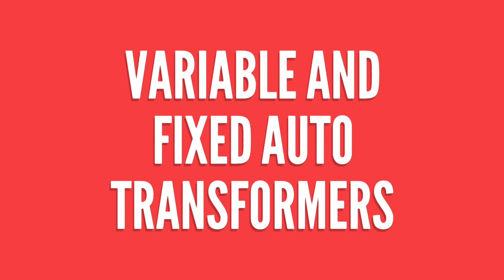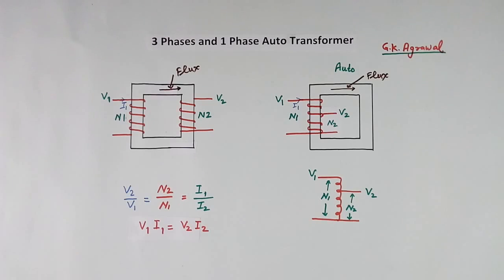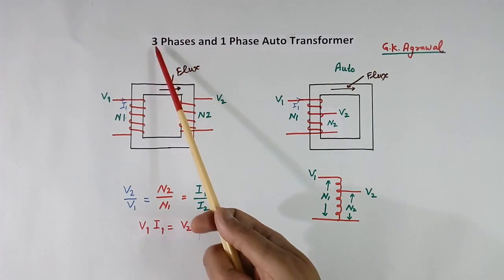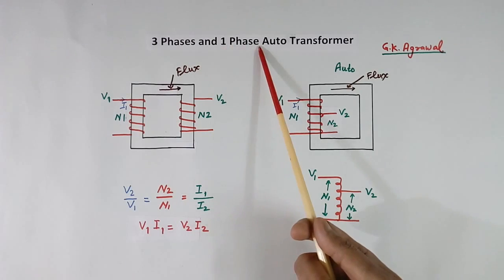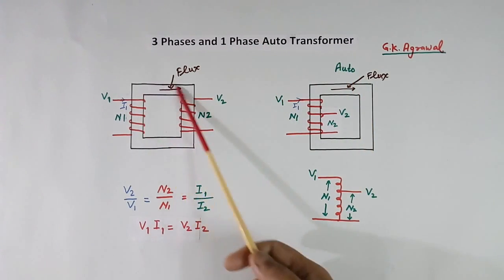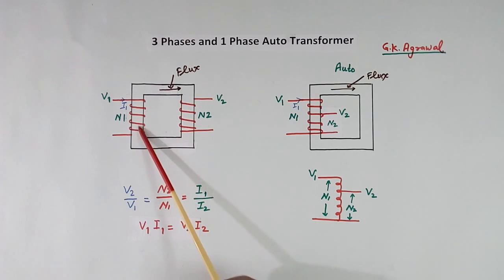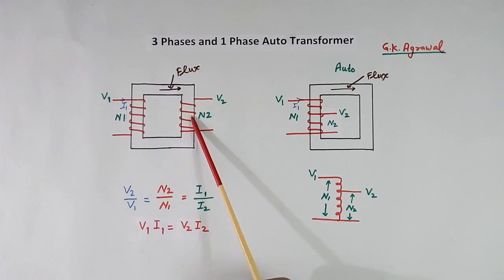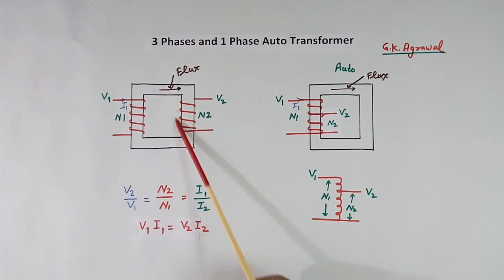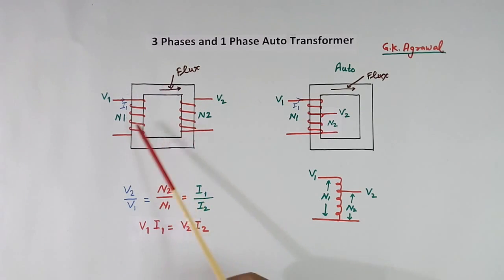Today I will explain about 3-phase and 1-phase auto transformers. Here I have shown a single phase normal transformer. It has 2 windings, primary and secondary. The flux circuit is common, but the electrical circuit is different. They are isolated.